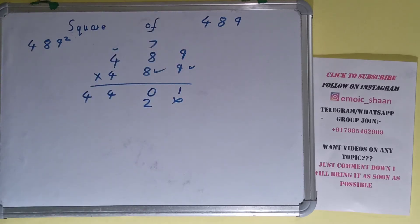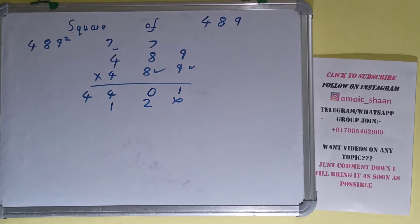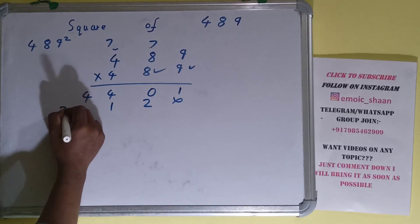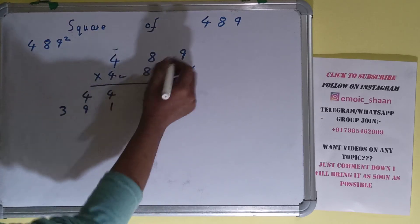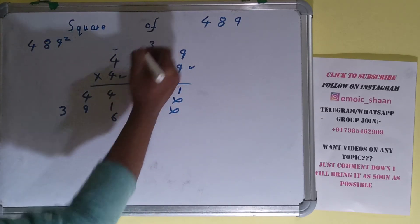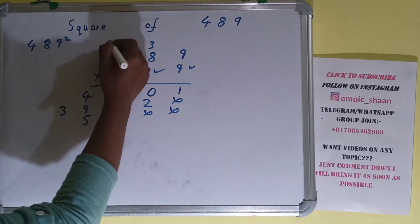Now this 4: 4 times 9 is 36, 3 carry. 4 times 8 is 32 plus 3 is 35, 3 carry. 4 times 4 is 16 plus 3 is 19.